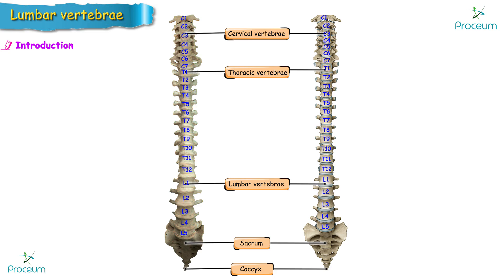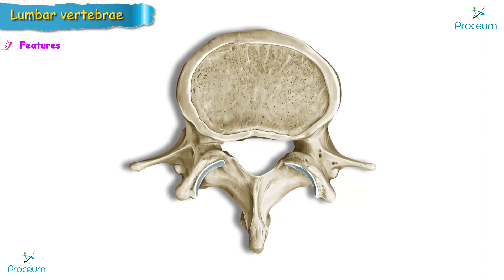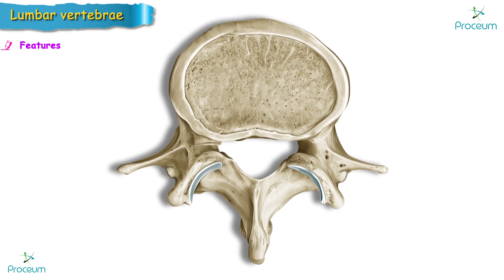In this video we're going to discuss the osteology of lumbar vertebrae. The lumbar vertebrae consist of the same elements as the thoracic vertebrae but are more massive, as they are weight-bearing vertebrae. There are five lumbar vertebrae, out of which the first four are typical while the fifth is atypical.